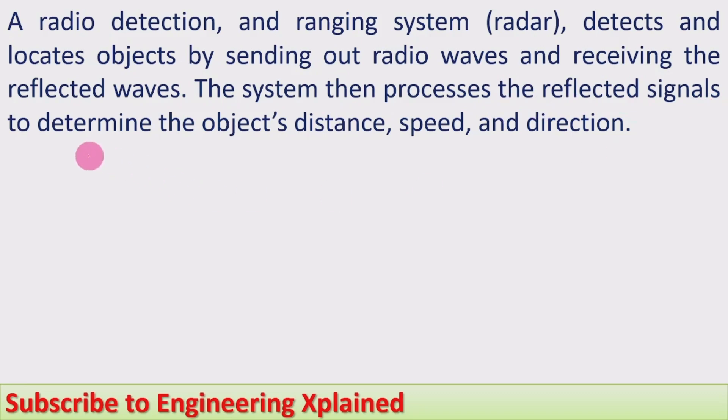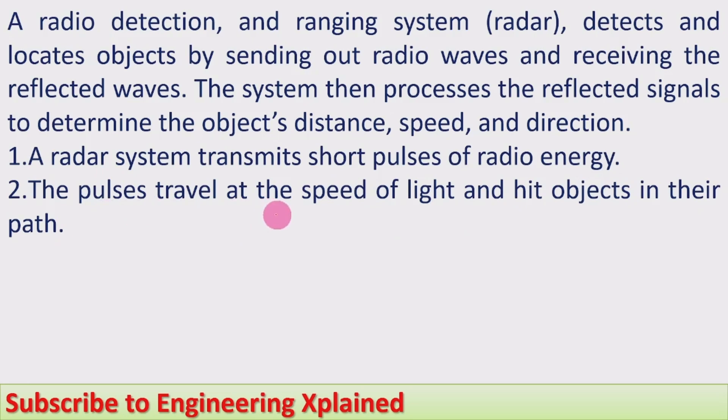Step by step, how it operates: A radar system transmits short pulses of radio energy. The pulses travel at the speed of light and hit objects in their path.